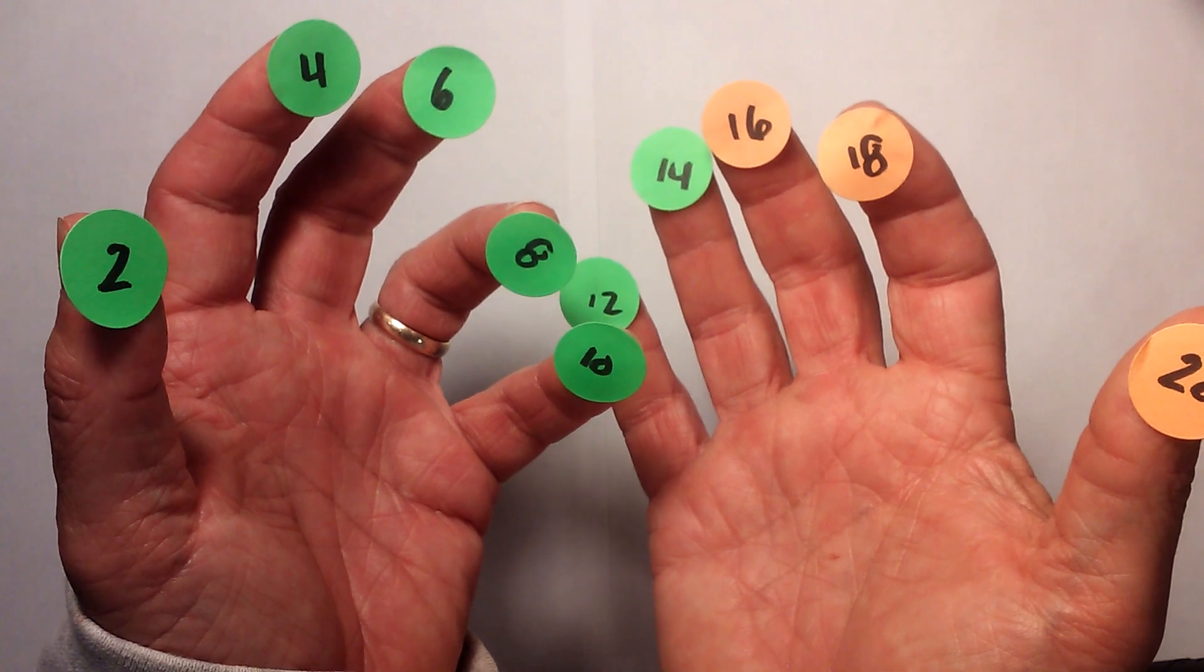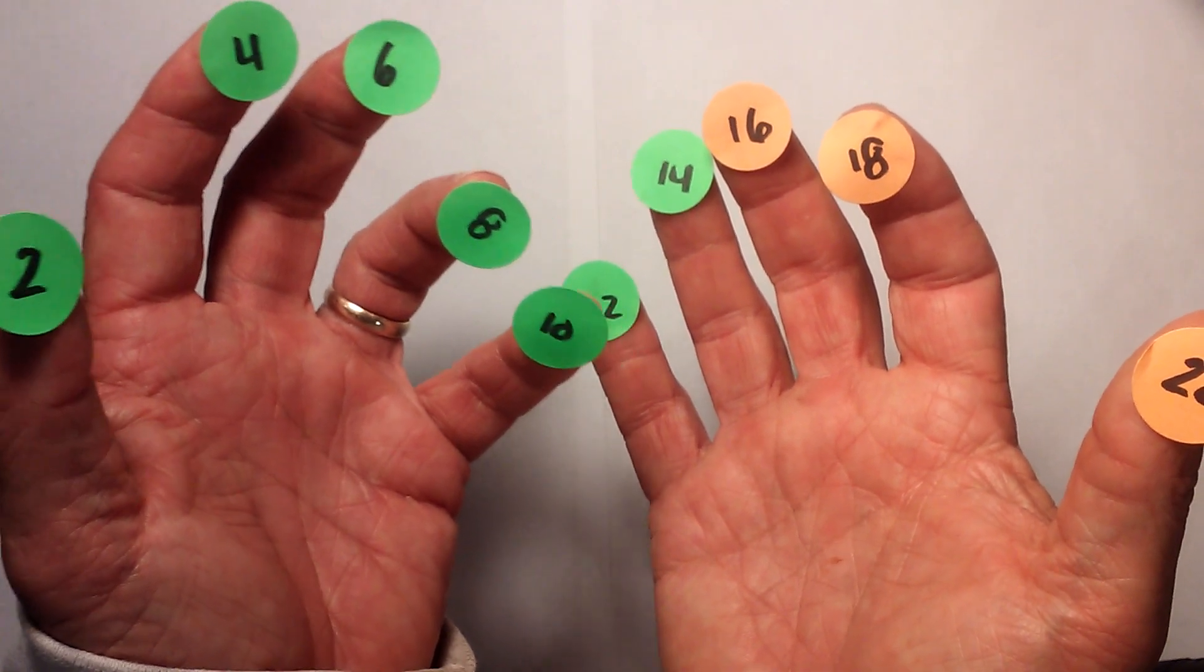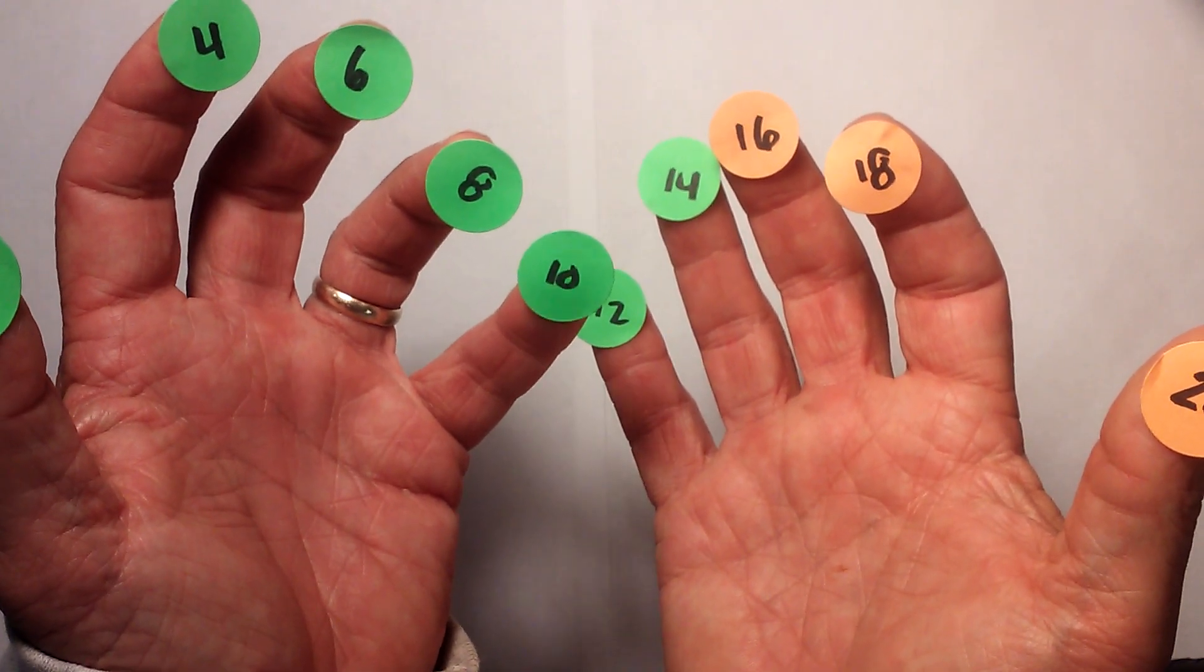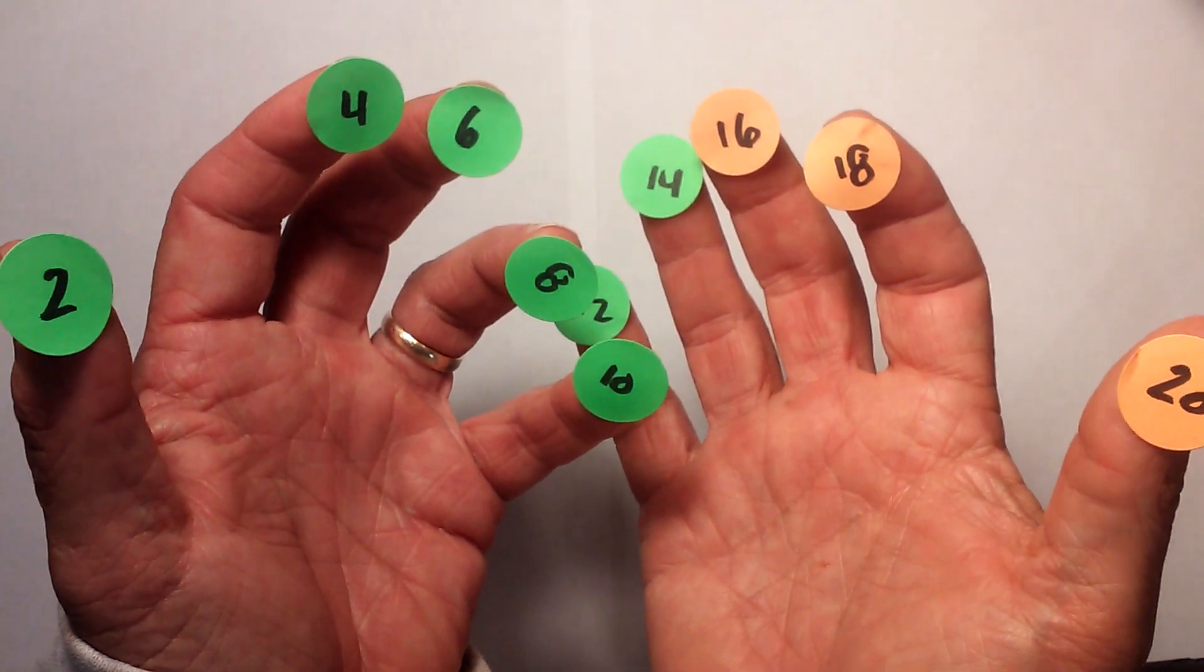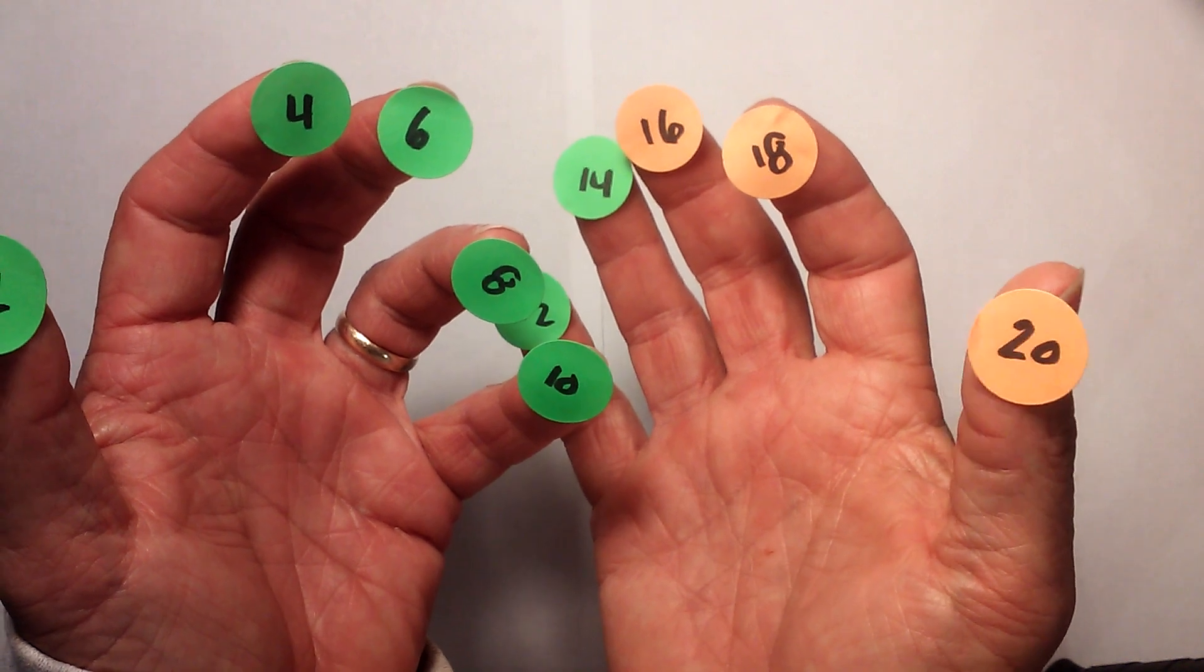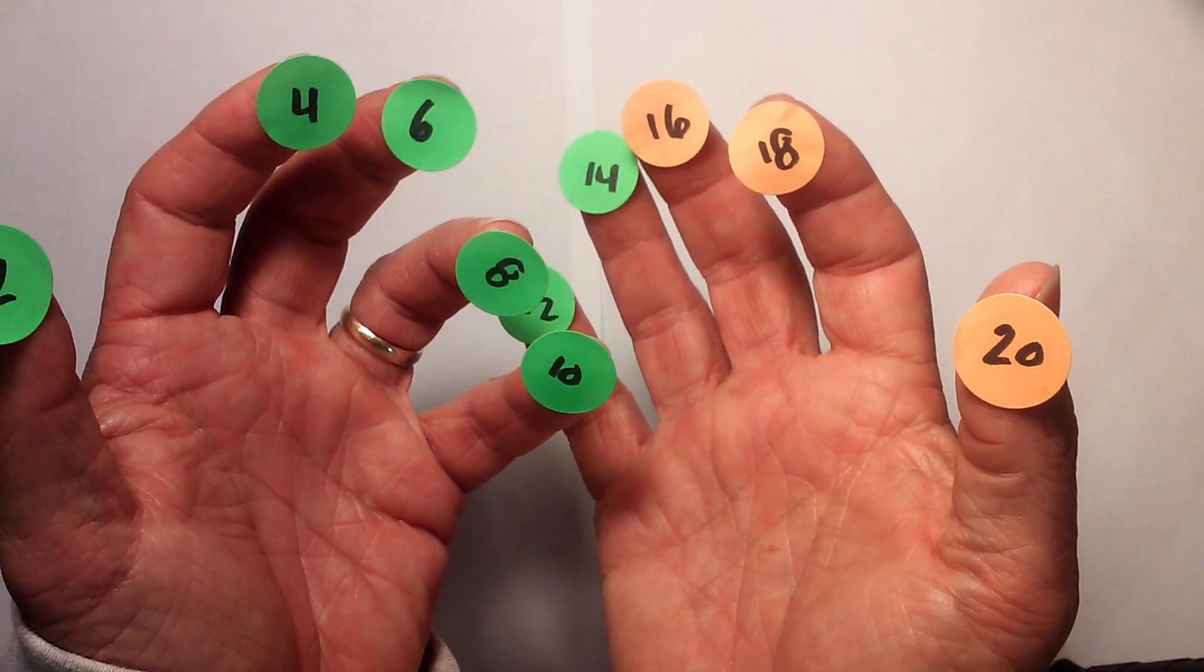If it is odd, it will end in 5, except for the number 1. And this thumb, which is 10, you just always add a 0 to the number you're multiplying by.